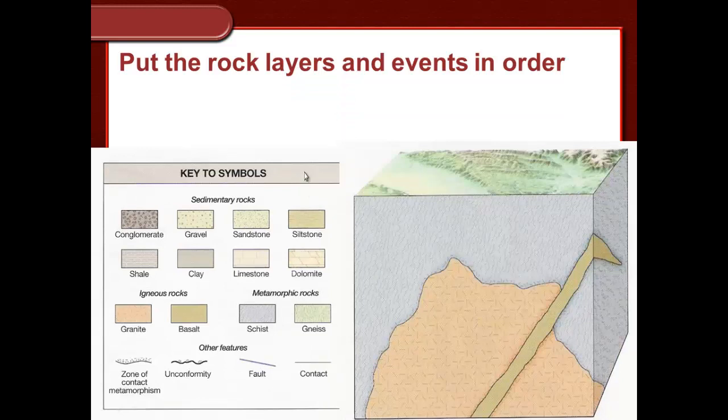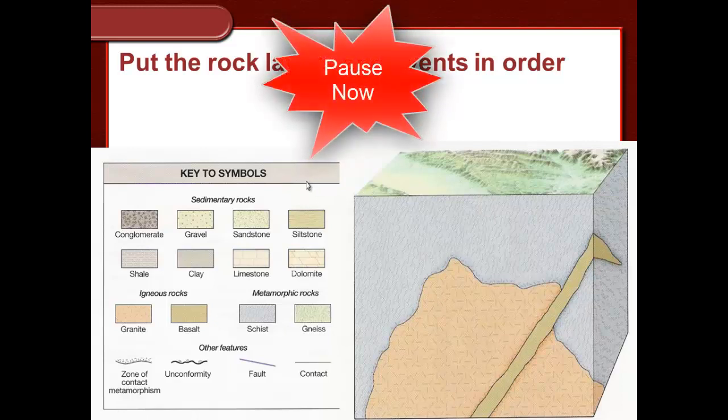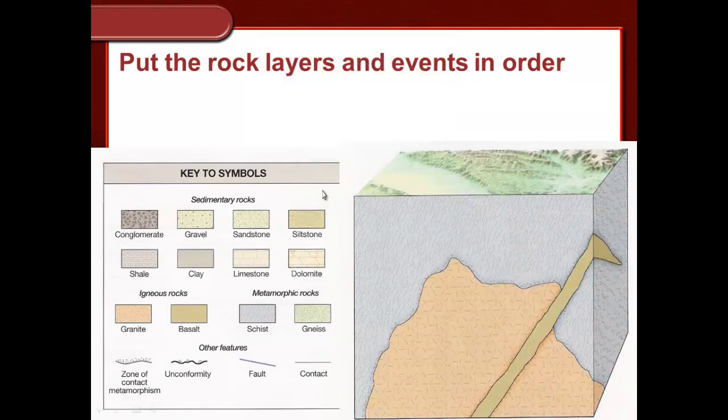Okay, this one's tricky. There's only three things on here. Again pause and try to put them in their relative order. So we've got this metamorphic schist, we've got this granitic igneous rock here, and we've got this basalt.